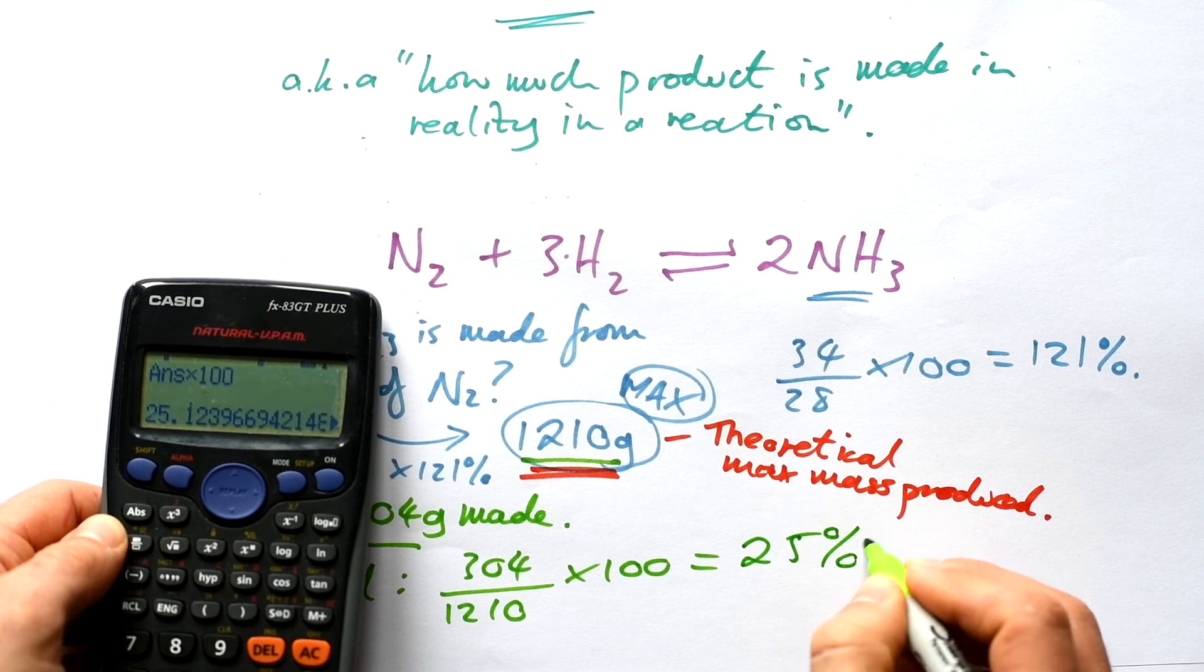Theoretical value versus real value. We want to know the yield - it's a percentage as usual. It's the actual amount divided by the theoretical value times 100. That gives us a percentage yield of 25%.